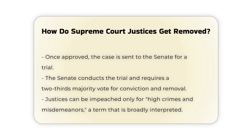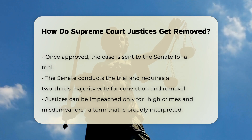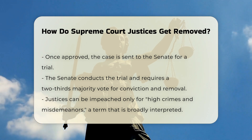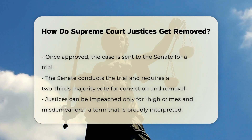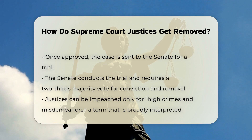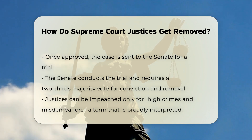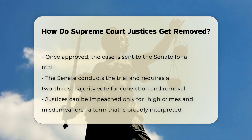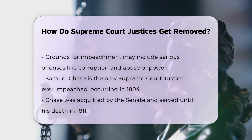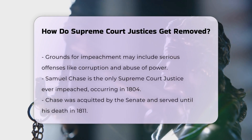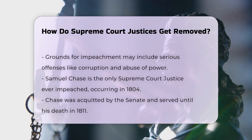Historical precedent: Only one Supreme Court justice, Samuel Chase, has ever been impeached. This occurred in 1804, when Chase was accused of partisan behavior and judicial misconduct. However, he was acquitted by the Senate and remained on the Supreme Court until his death in 1811.